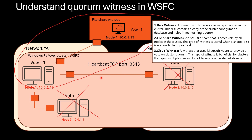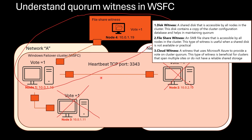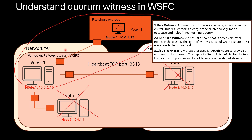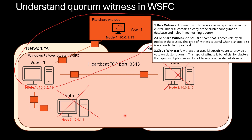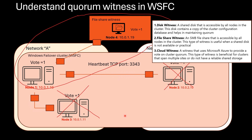You might ask which witness type is better. The answer is: it depends. The one which is stable and highly available is better. It is best practice to configure the witness outside of the cluster network on a separate server. That way, if network B or network A experiences an outage, the witness keeps operating and is not impacted. Therefore, configure witness separately, outside of your cluster and outside of your network.